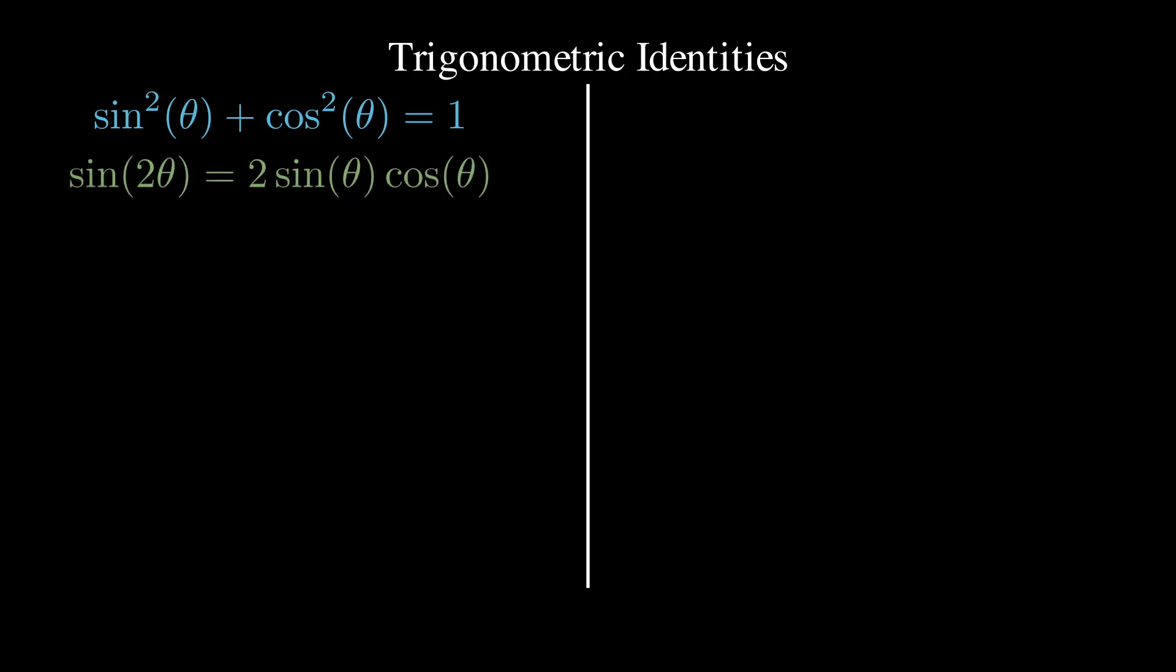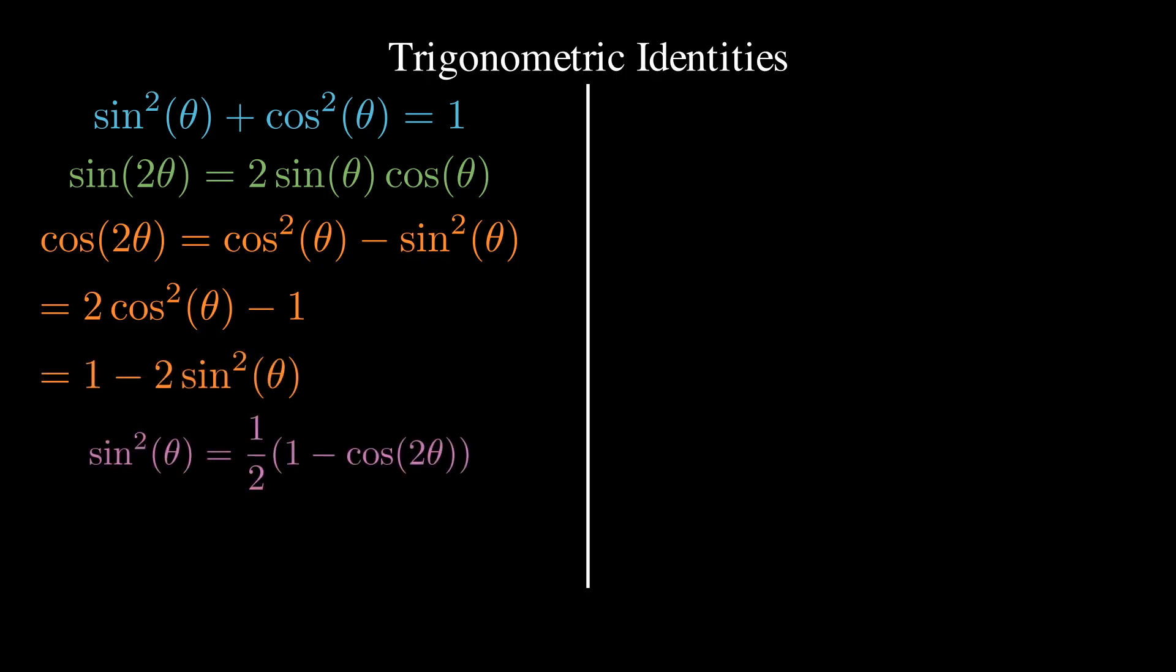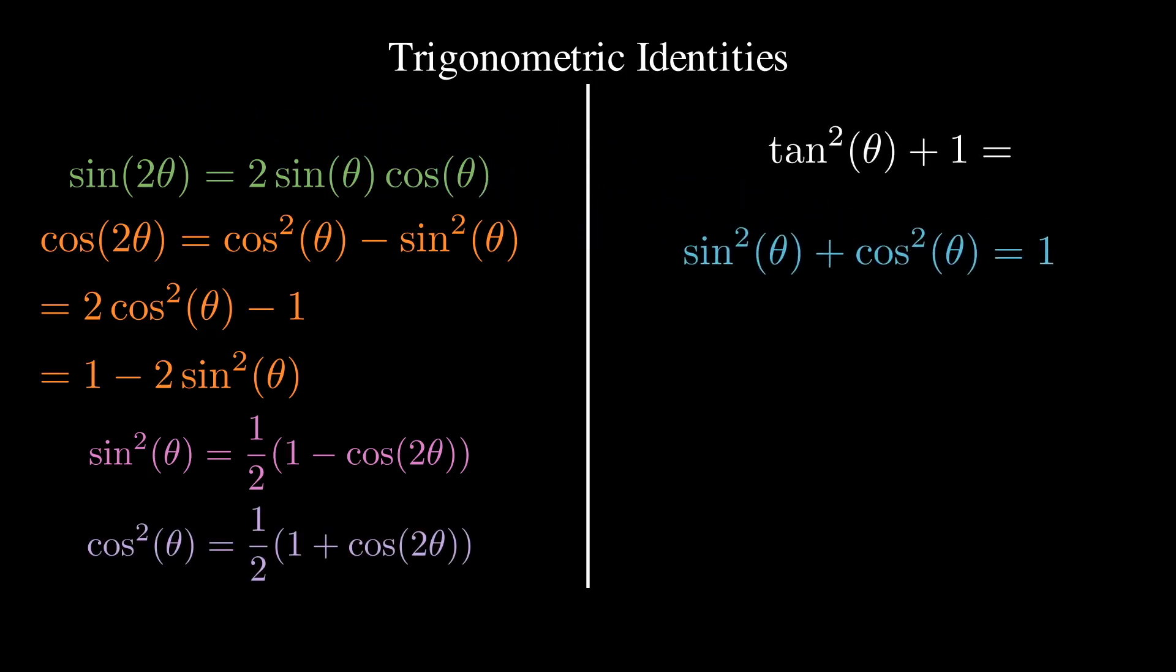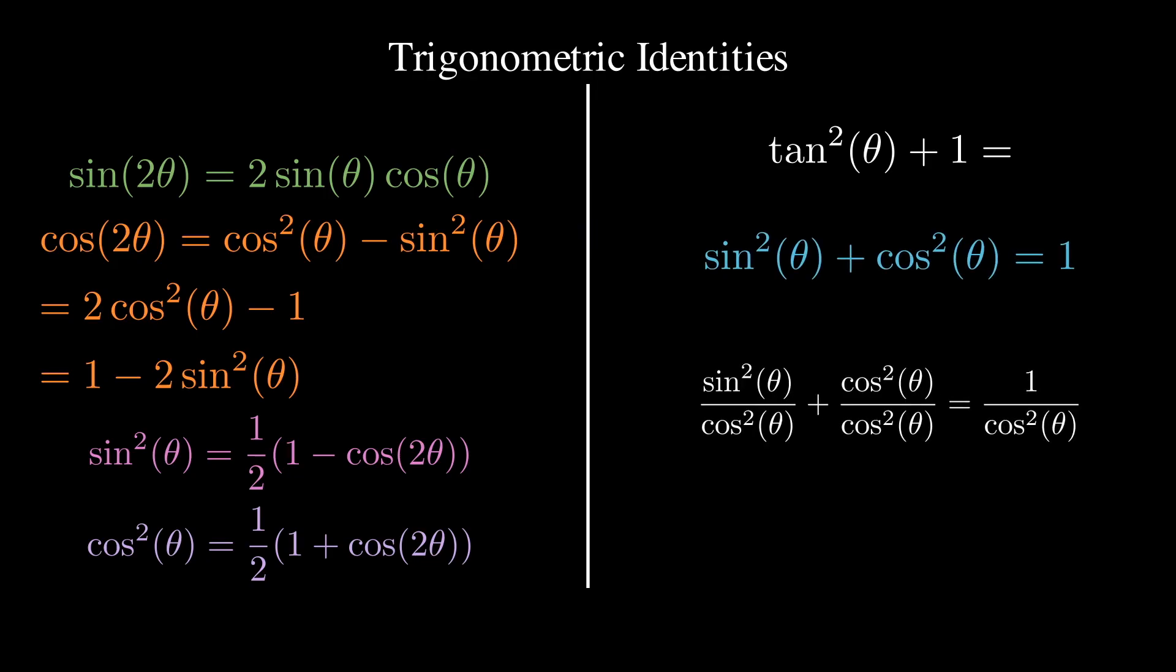From a pre-calc trig class, you have learned a lot of trigonometric identities. However, the three that you should focus on are the Pythagorean identity, the double angle identities, and the power reducing formulas. Let's do an example: tan squared theta plus 1. We are going to use the Pythagorean identity here. Once we got that, we divide everything by cos squared theta, and remember, one over cosine is secant. This verifies our identity.